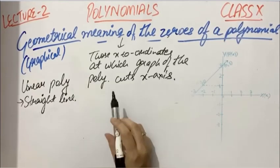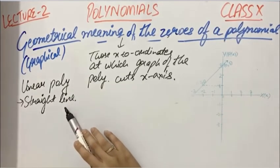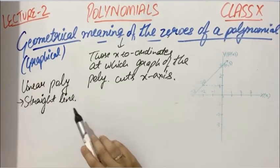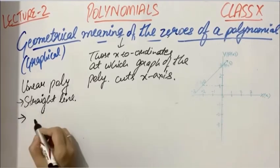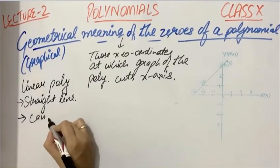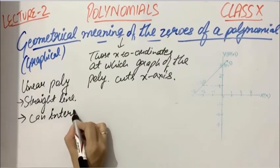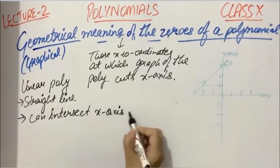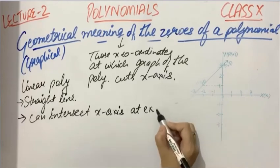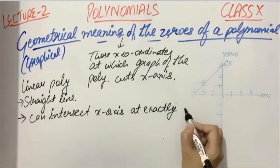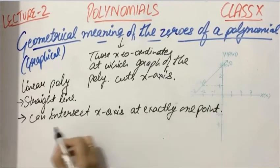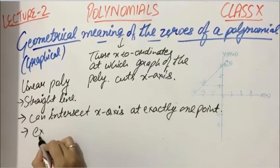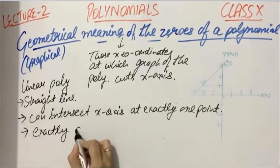Here you considered a linear polynomial whose graph is always a straight line, and the graph of a linear polynomial can intersect the x-axis at exactly one point. So this means that a linear polynomial has exactly one zero.